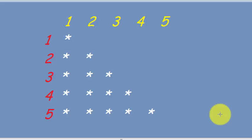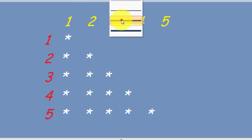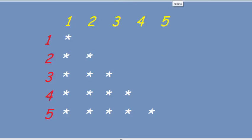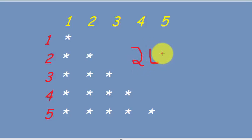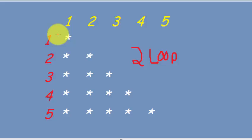To print this pattern in C++ we need two for loops. One loop controls the number of rows and one loop controls the number of columns.